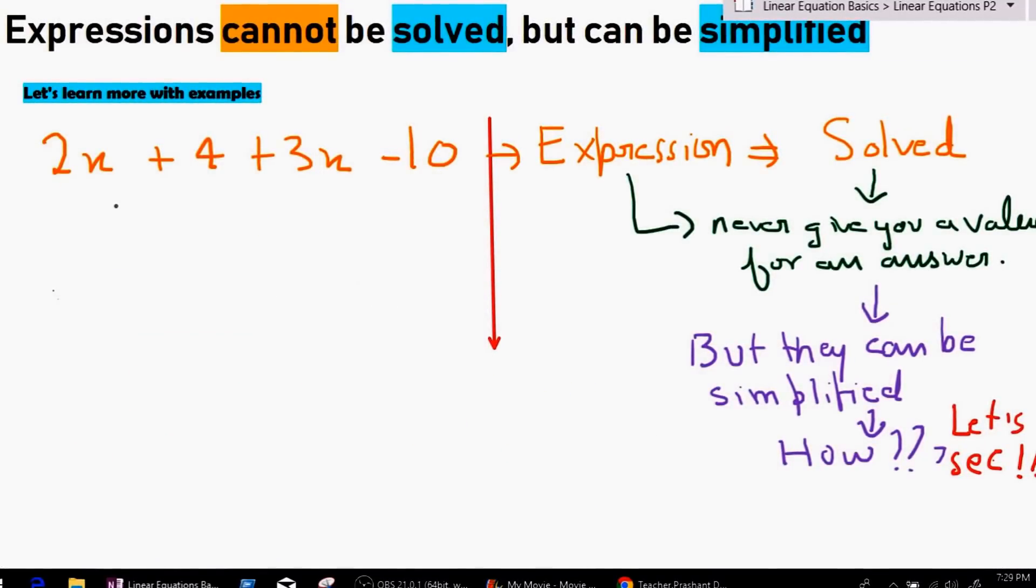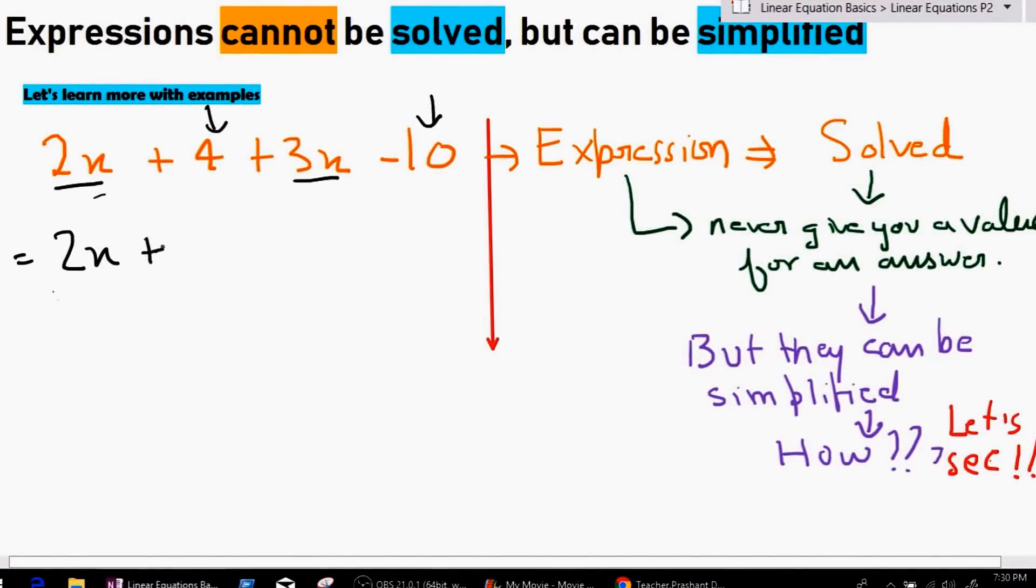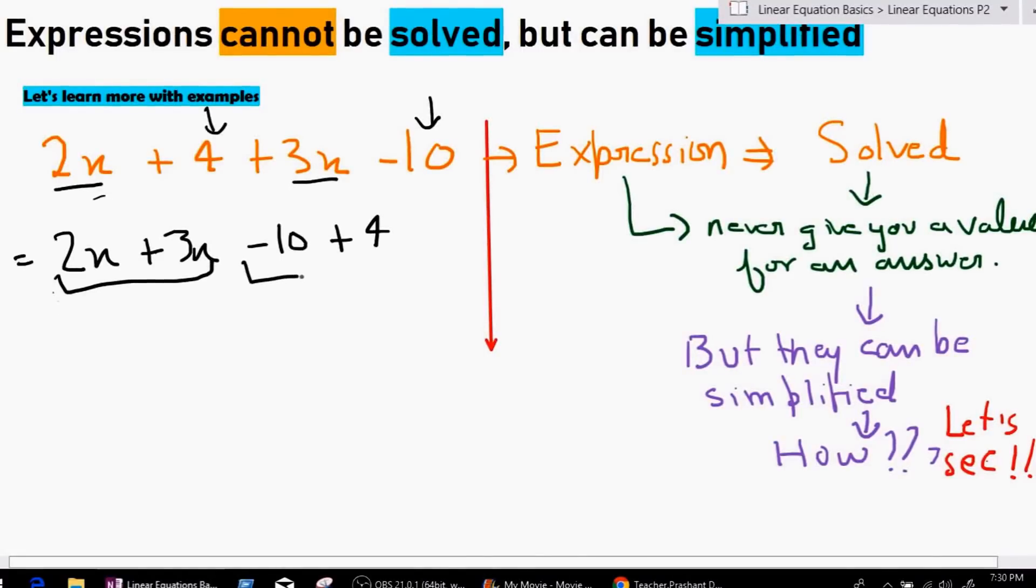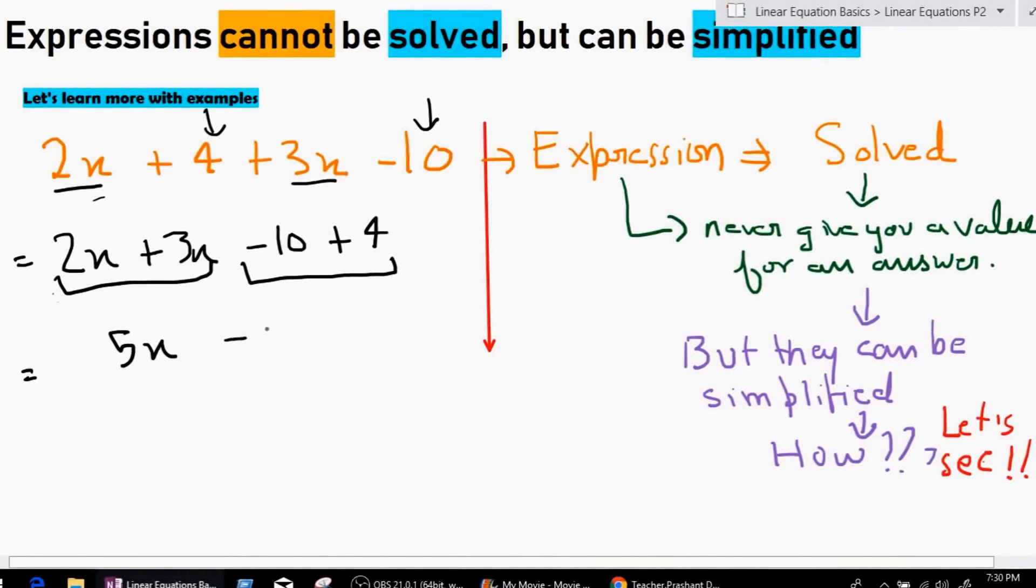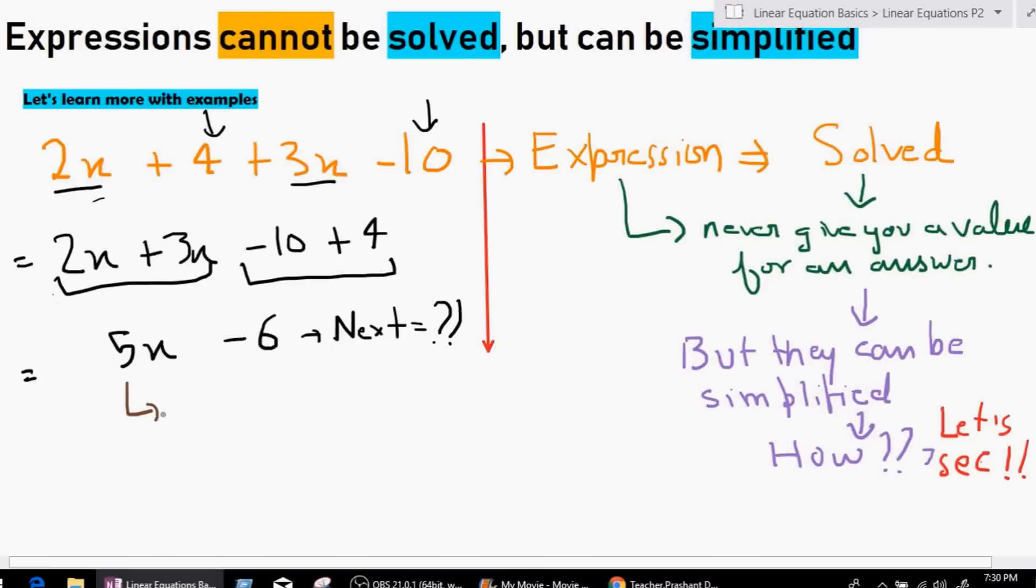Now let's go and simplify this expression right here. So let's just keep the like terms together. So I am going to write 2x plus 3x minus 10 plus 4. So these are one set of like terms and these are one set of like terms. So what is 2x plus 3x? 2x plus 3x is 5x, and minus 10 plus 4 gives out the value of minus 6. Now, what is the next step? And I have to tell you that that's all we can do. That's all we could do.